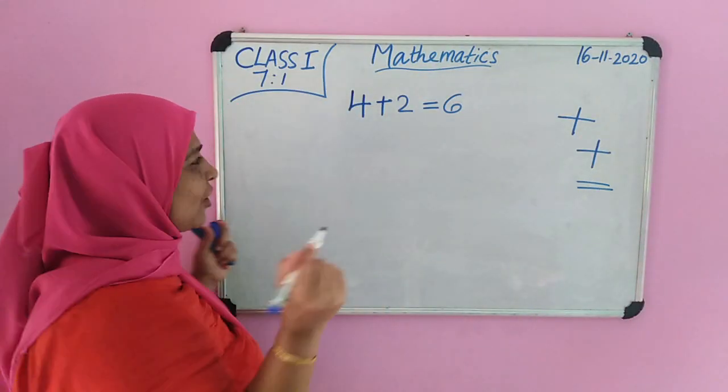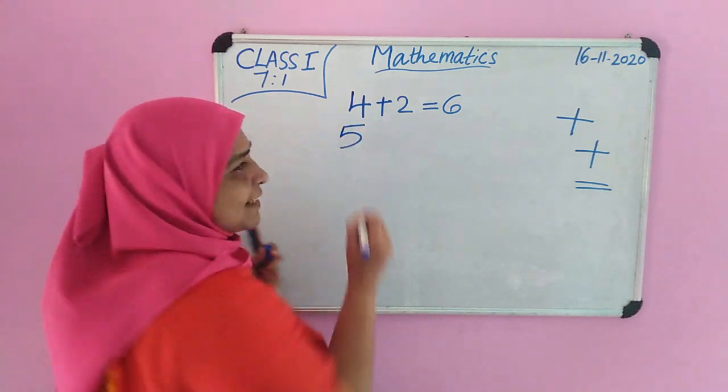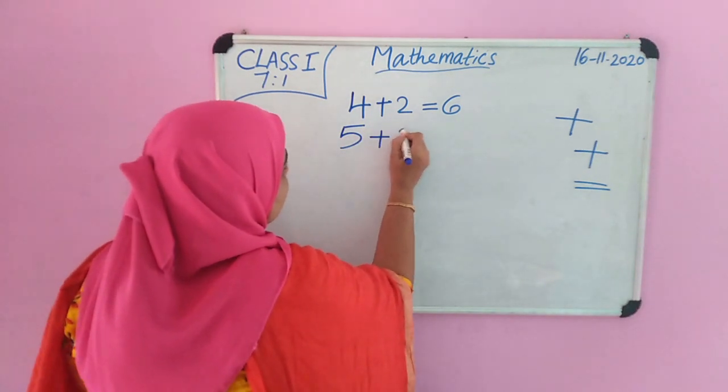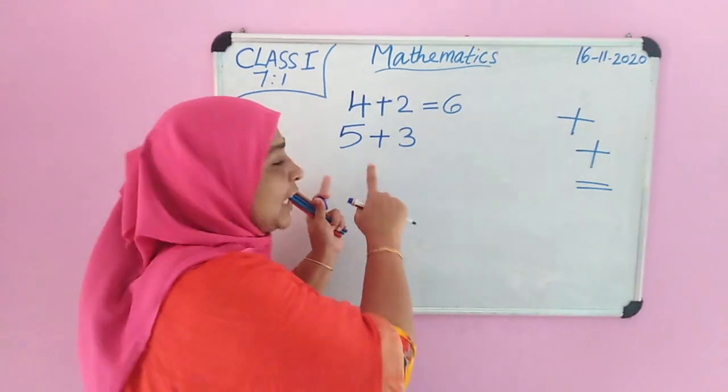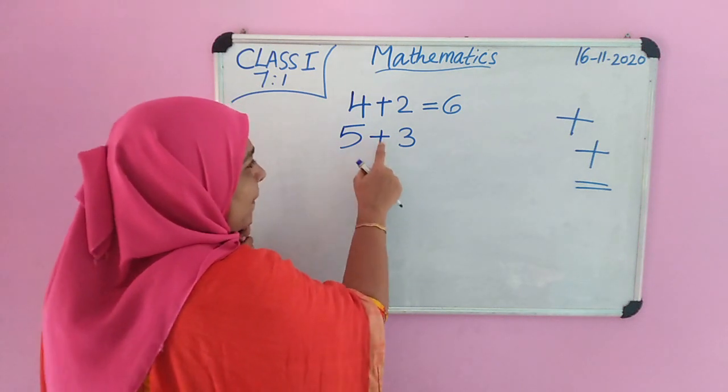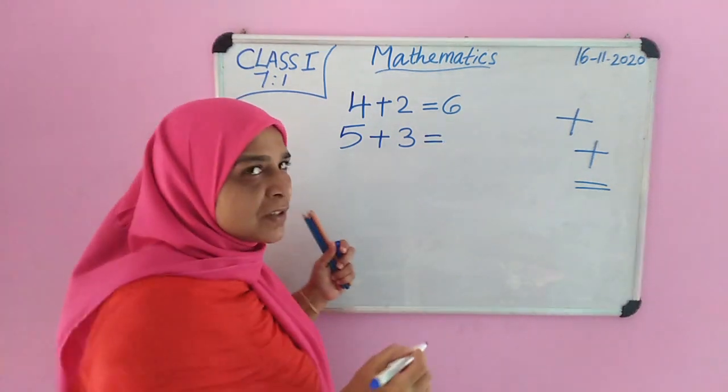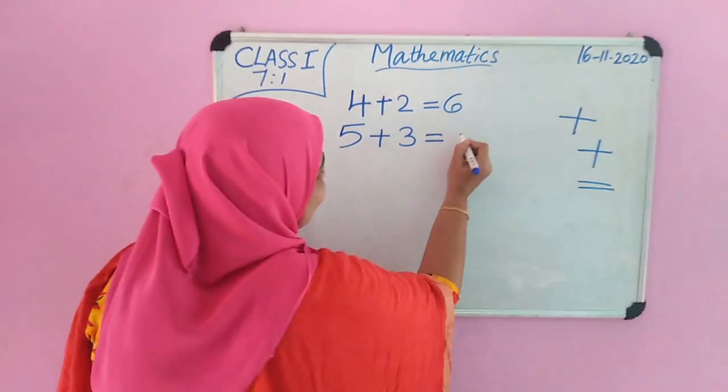Now listen. Which number is this? Children tell me 5. Which number is this? Children tell me 3. We read it 5 plus 3 equal to 8. Very good.